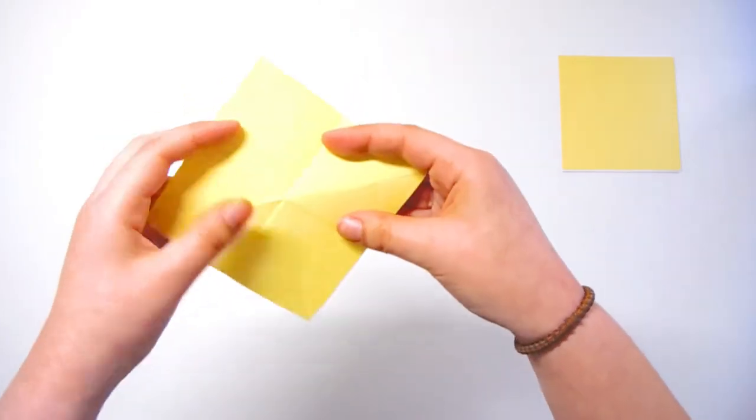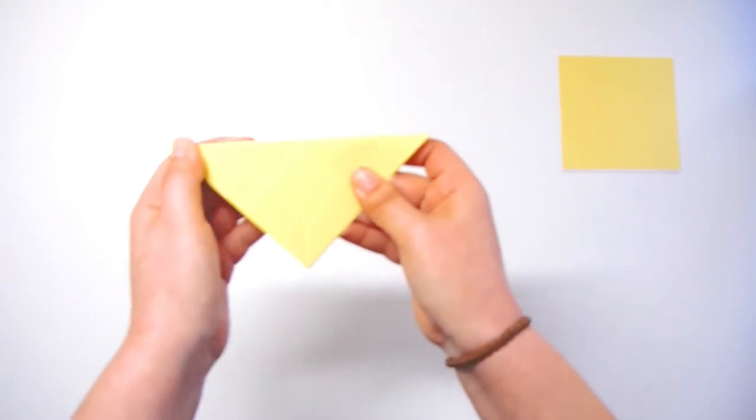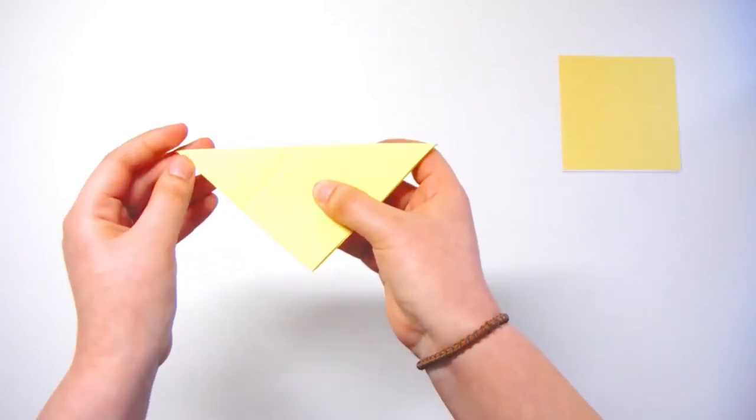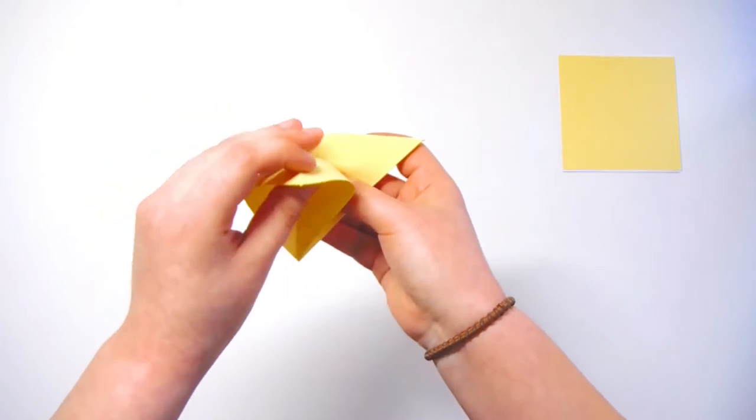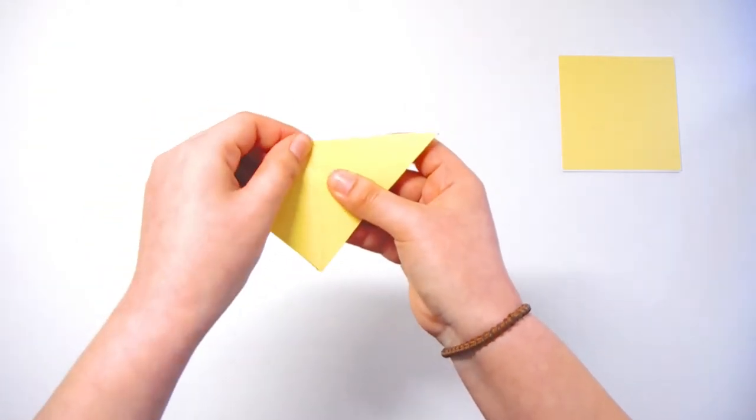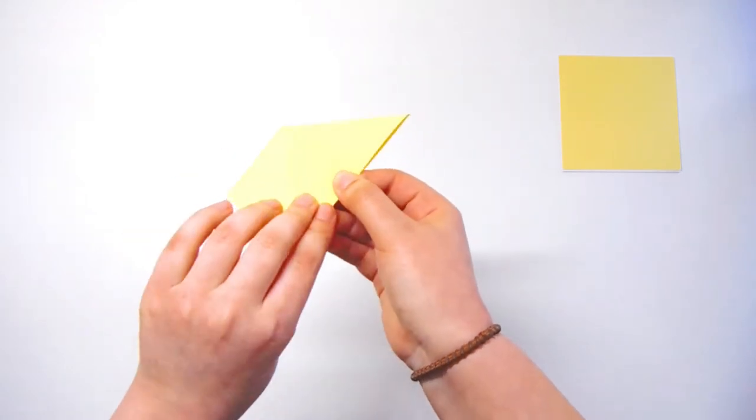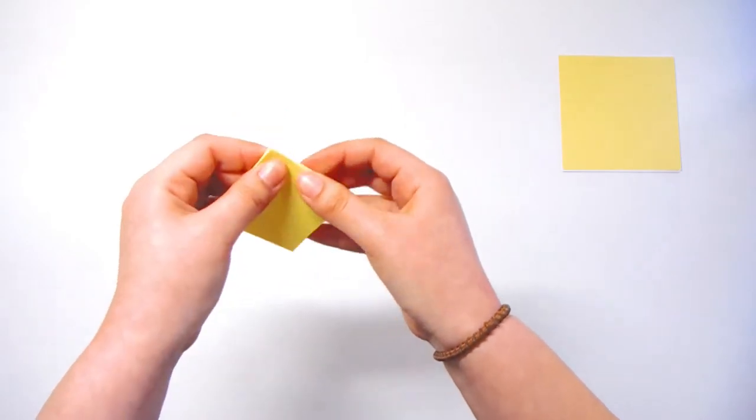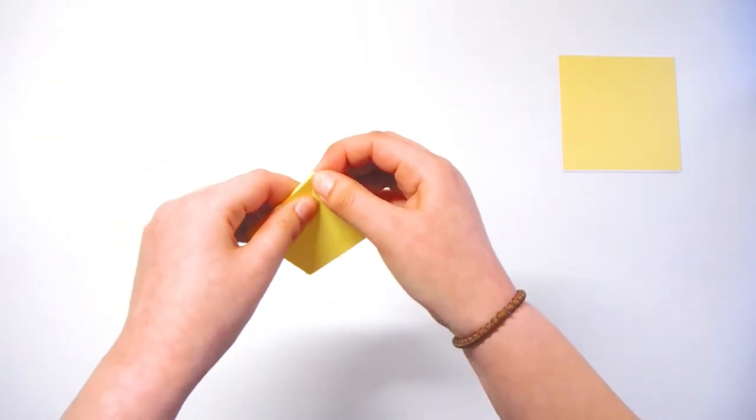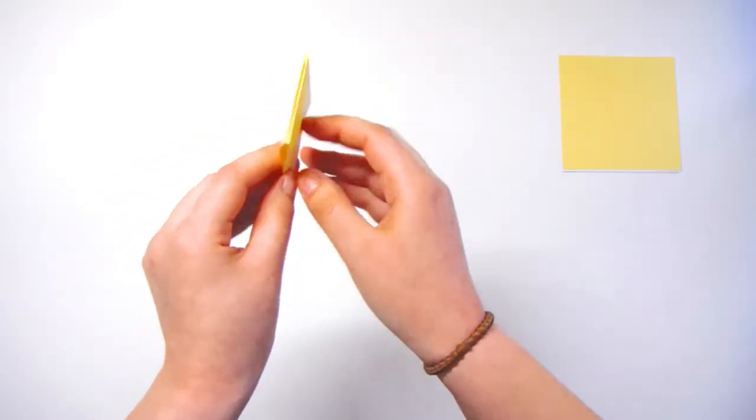So next what you are going to do is you are going to fold it into that triangle shape again. So you have something that looks like this. Then you are going to take this edge, open it up like that and you are going to bring it down so that it now makes a diamond shape just like that. Then you want to flip it over and you want to open up the other side and fold it down so it makes a diamond shape. So now you have a piece that looks like that.